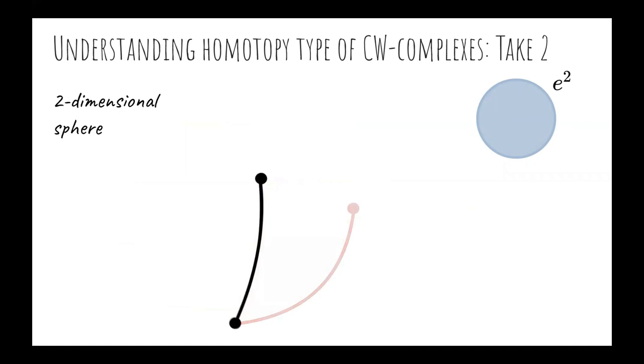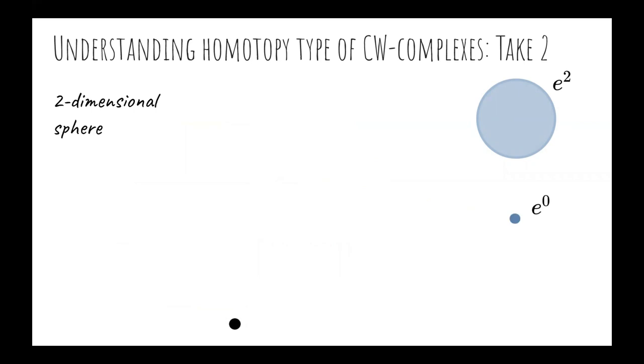Now, how to reconstruct the homotopy type of the original complex? Well, the Discrete Morse theory tells us that the original CW structure can be simplified into this new structure with a single 0 cell and a single 2 cell, that is a minimized structure of a sphere, without changing its homotopy type. If you don't remember the details of classical Discrete Morse theory, don't panic. I will recall it for you.